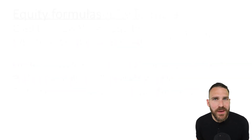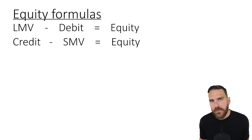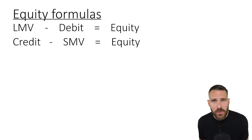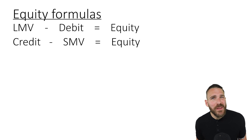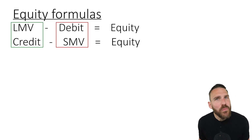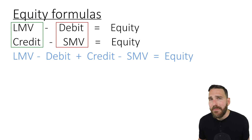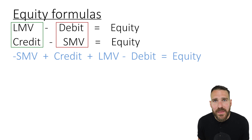That leaves us with the two equity formulas: LMV minus debit equals equity, and credit minus SMV equals equity. For a combined brokerage account with both long and short positions, just put these two formulas together — keep the positives positive and the negatives negative. One way to state it: LMV minus debit plus credit minus SMV equals equity. The order can shift as long as the signs stay correct. For example, negative SMV plus credit plus LMV minus debit is also a valid expression of the combined equity formula.